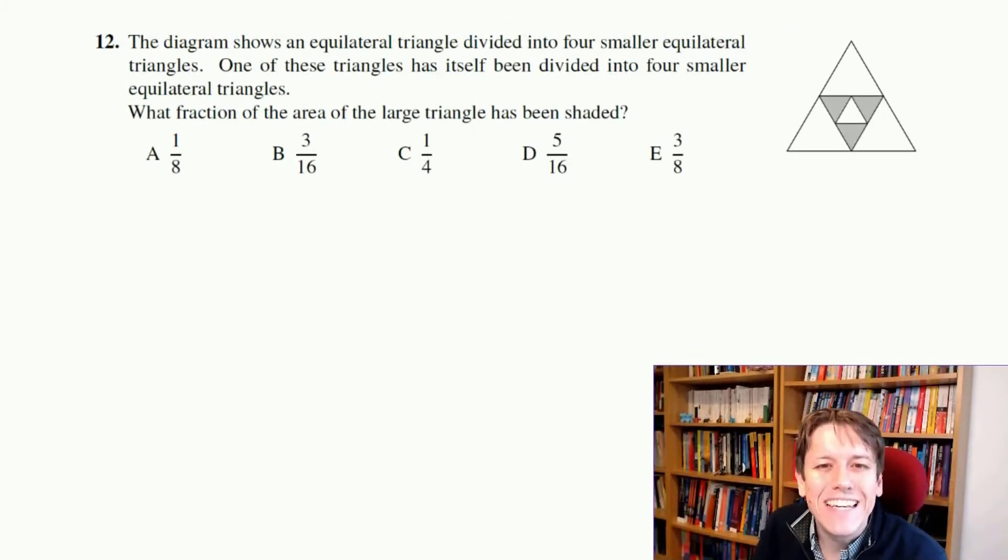In question 12, we've got an equilateral triangle divided into four smaller equilateral triangles. So 1, 2, 3, 4, here. What fraction of the area of the large triangle has been shaded? Well, so you could say, okay, I've got 1, 2, 3, 4 triangles here.